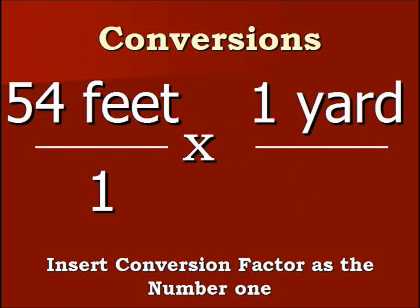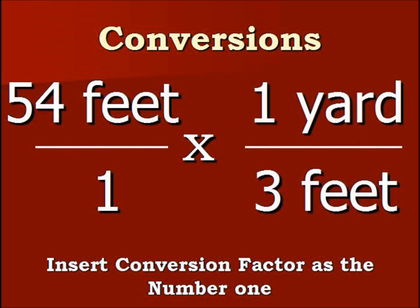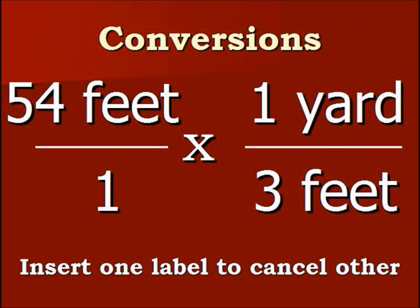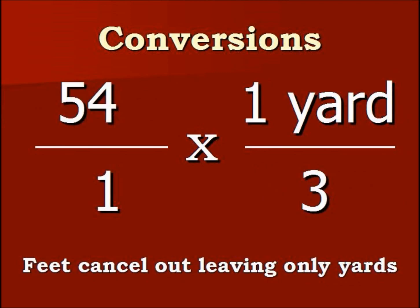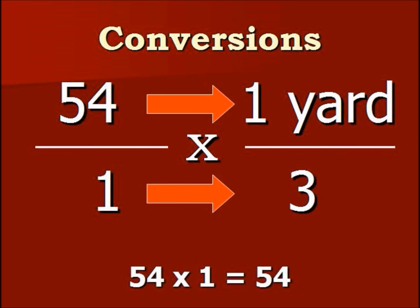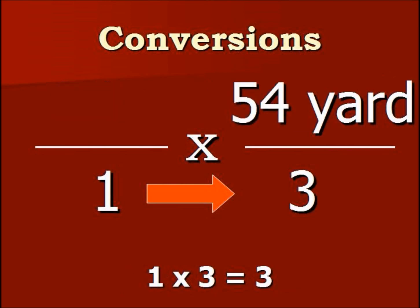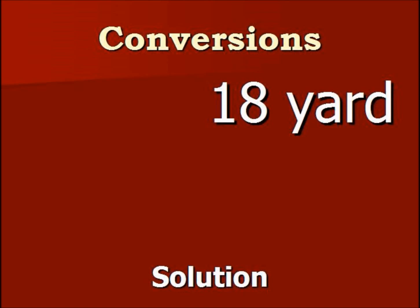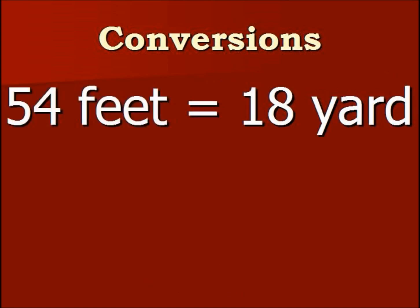We insert one yard divided by three feet, and we have the yard on top because that's what we're converting to. We're inserting one label to cancel another label out, so the feet cancel out. We remove the feet. Now we have 54 over one times one yard over three. We multiply straight across: 54 times one is 54, one times three equals three. So we have 54 divided by three, which gives us 18 yards. So 54 feet equals 18 yards.